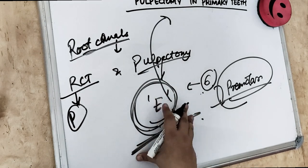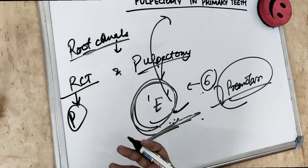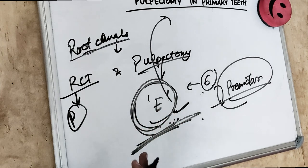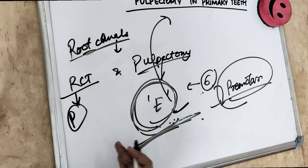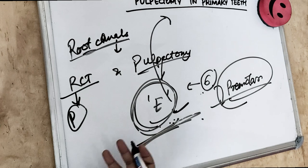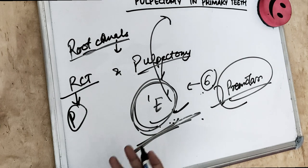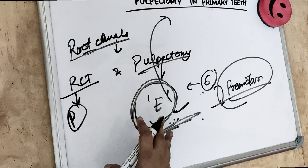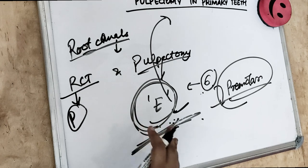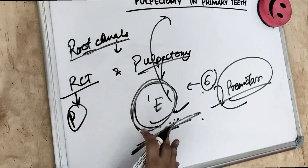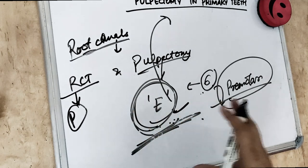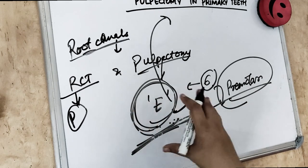Pulpectomy is contraindicated where there is a non-resorbable tooth, where there is mobility, where there is reduced bone, where there is PDL widening, in cases of a medically compromised patient, or if less than two-thirds of the root length is remaining — meaning most of the root is resorbed. In these cases, we do not go for pulpectomy.